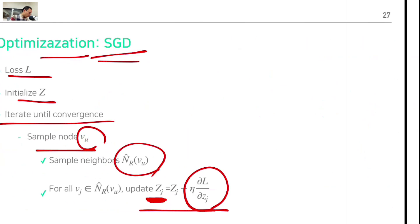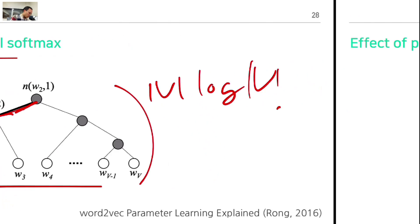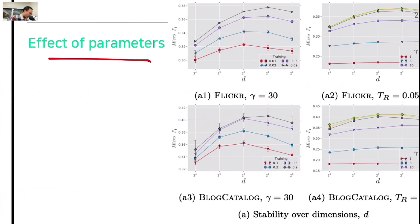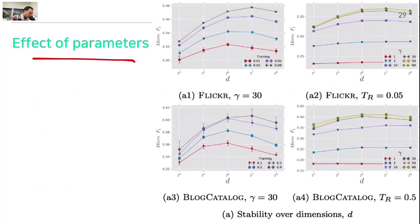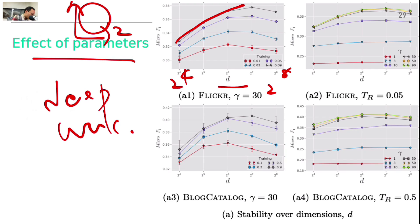For negative sampling, the time complexity is linear — much faster. Looking at the parameter sensitivity figures from the DeepWalk paper: this shows the dimension of the latent representation. Starting from dimension 2 and going up to 2^4, 2^8, performance goes up and at some point comes back down, depending on the training proportion.